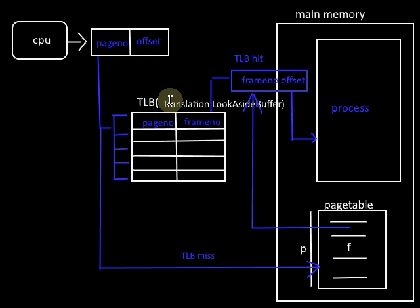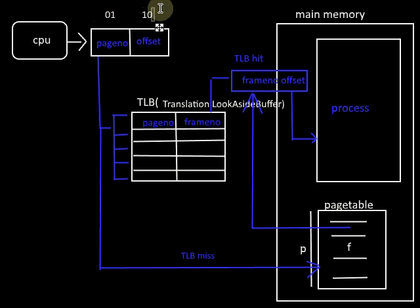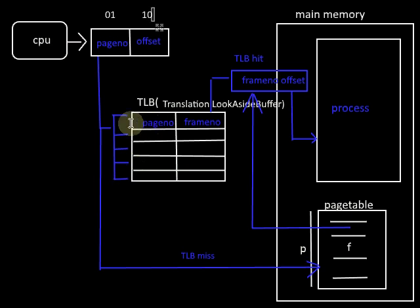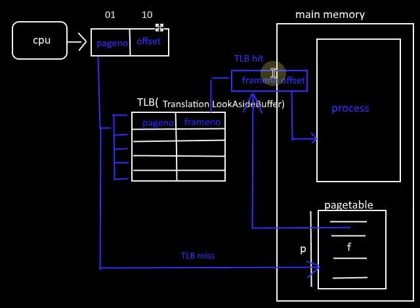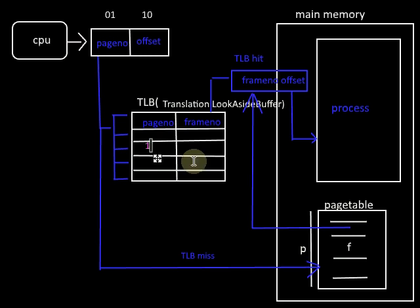For example, let the logical address generated by the CPU be 0110. Assume the first two bits represent the page number — so page number is 01 (page 1). We go to the Translation Lookaside Buffer and compare with every page number present in it. Here the TLB is empty, so we have to go to the main memory to access the page table. Assume the frame number to which this page number is mapped is 6 — page number 1 is mapped to frame 6. We get the physical address and access the byte, requiring two memory accesses.